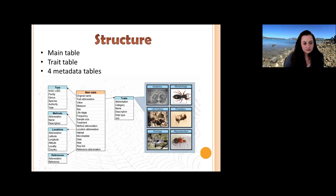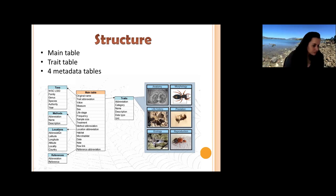There are also four metadata tables. First, a taxonomic table with information on higher taxonomic levels such as family or genus, depending on whether the trait is measured at species or individual level. Then a metadata table containing information about methods — how the trait was measured — and geographic information such as latitude, longitude, altitude, or country. Finally, a references table with the detailed reference where the trait data come from.